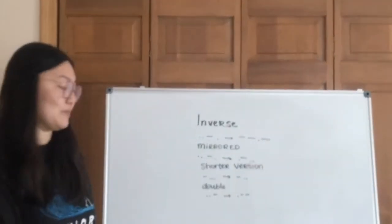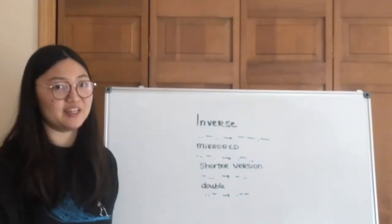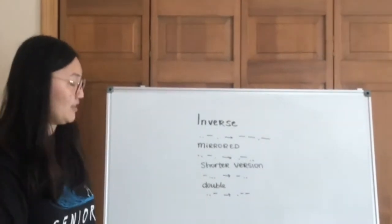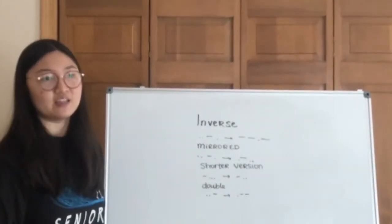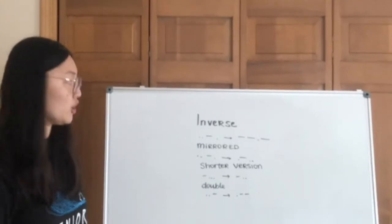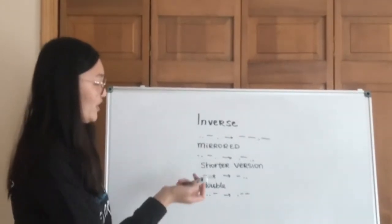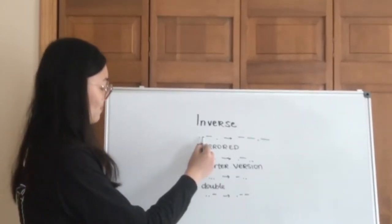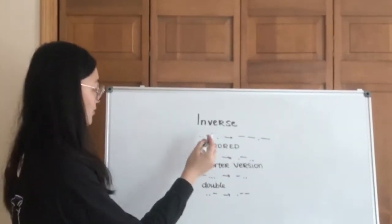Here are some terms that I invented for myself to help memorize all these things, and these will help also clarify when I show you how I memorize Morse code. So first of all, the inverse describes the relationship between two codes where in the position of two dots you will put a dash.